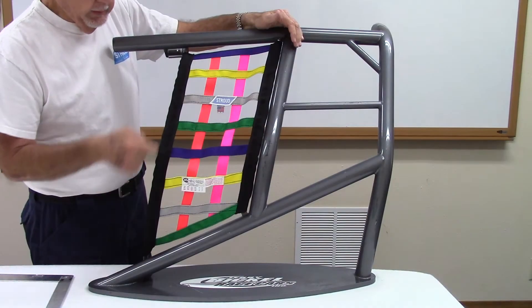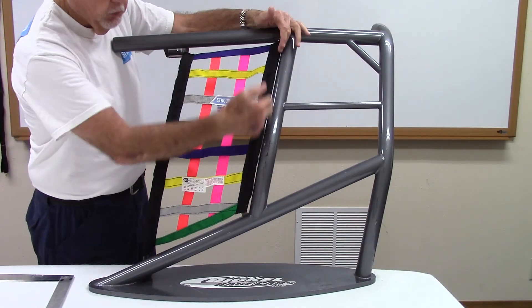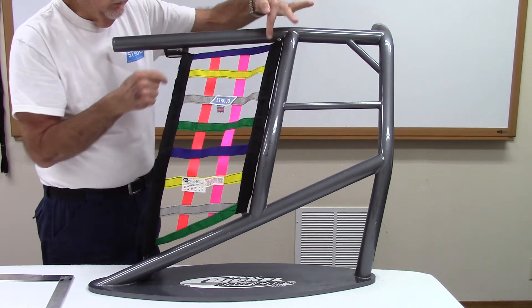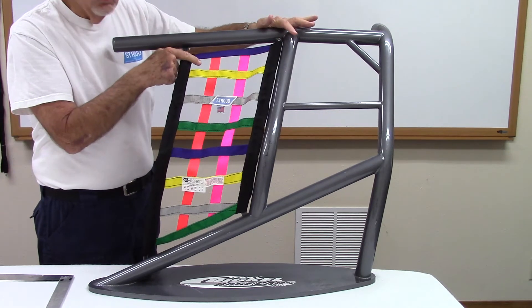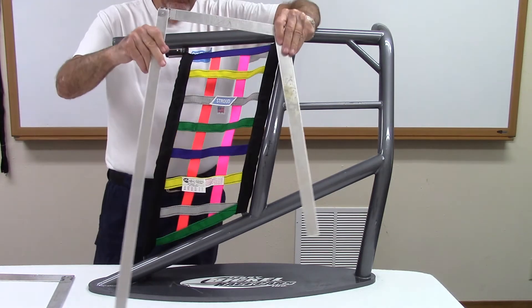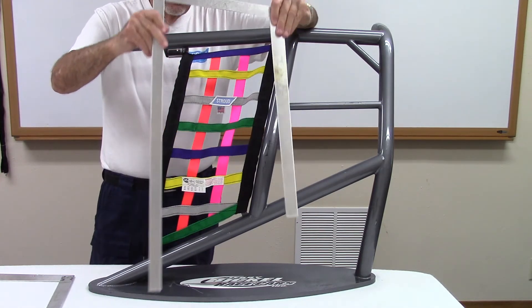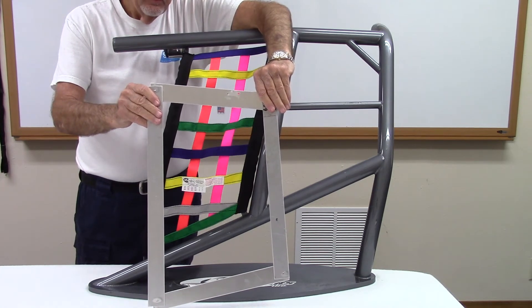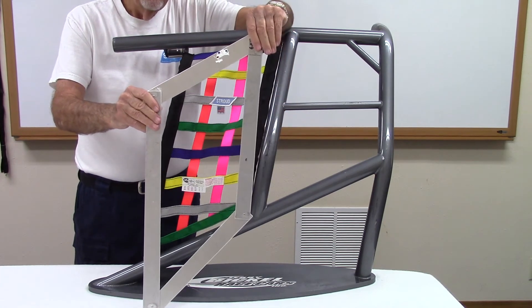To measure properly for a custom net, you need the length of the front and back sides, the top side, and the angles of the top front and top back corners. As shown in the video, providing just the lengths of three sides or four sides without the angles is useless in determining the actual shape of your net.